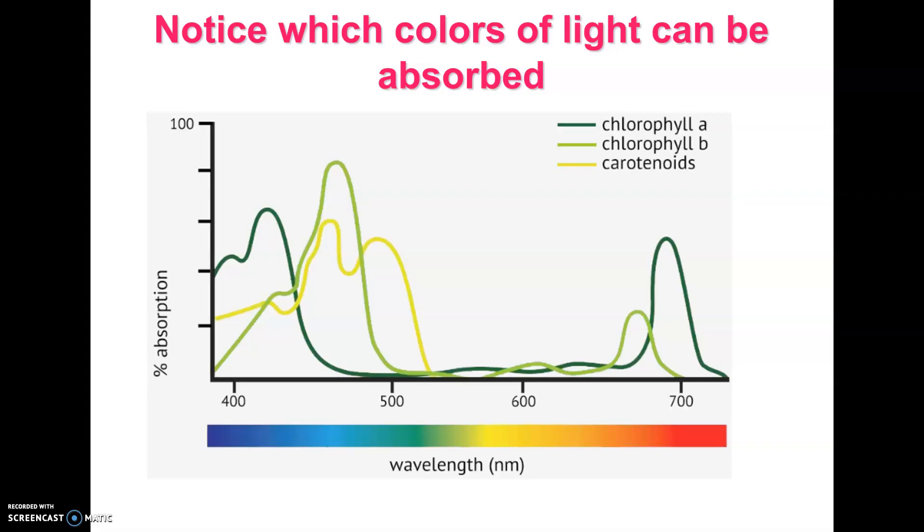And it would be very possible that you could see a picture like this on the AP exam. And so absorption, if they're absorbing the light, the higher the peak, that's light they're using. If they're absorbing it, it means that the pigment molecules are actually taking in that light and capturing the energy from it.